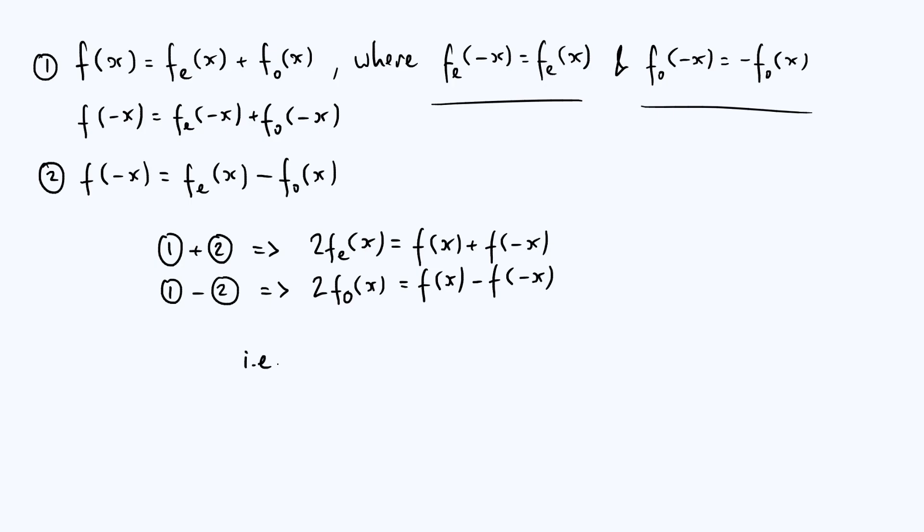And so the conclusion to this, let's just write out my conclusion, is that any function f of x, you can write in the following way. You can write it as f of x plus f of minus x divided by two, where this part of the function is even, has even parity.